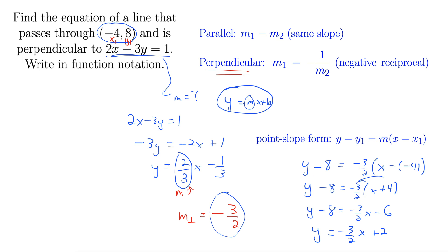The last thing it asks us to do is write it in function notation. That just means you replace the y with f of x. So I'll write my final answer here: f of x equals negative 3 halves x plus 2. That's the final answer.